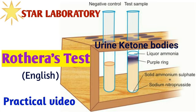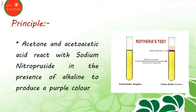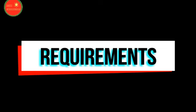The Rothera's test is used to detect urine ketone bodies and is a very simple test performable in ordinary laboratory setups. The principle is that acetone and acetoacetic acid react with sodium nitroprusside in the presence of an alkaline medium. As a result, we can observe a permanganate ring at the interface.